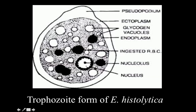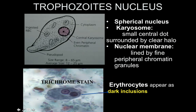The nucleus has a central dot in the center which is the nucleolus, also known as the karyosome. The nucleus is surrounded by a nuclear membrane, and this nuclear membrane has fine chromatin granules on it. Here you can see the central nucleolus — the karyosome — and the nuclear membrane lined by fine chromatin granules. The ingested RBCs are very important for diagnosis of this trophozoite. By trichrome stain, the erythrocytes appear as dark inclusions.